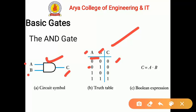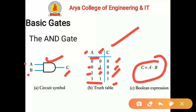If both inputs are 0, or low logic, then the output will be low. If A is 0 and B is 1, the output will again be 0. Similarly, if A is 1 and B is 0, the output will be 0. But if both inputs are high, then the output will be high. So the important fact for the AND gate: both inputs must be high to get a high output.